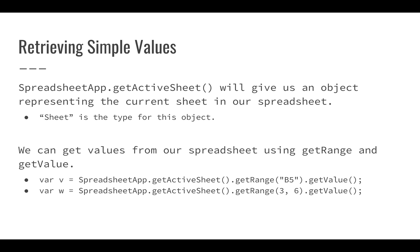Once you have the sheet — the one that's currently open via getActiveSheet() — if you have multiple sheets in your spreadsheet, this gives you the one currently being used. You can retrieve values from it using getRange() and getValue(). So if we wanted to get the value of cell B5, we'd use SpreadsheetApp.getActiveSheet().getRange('B5').getValue(), and that would return whatever is in cell B5.